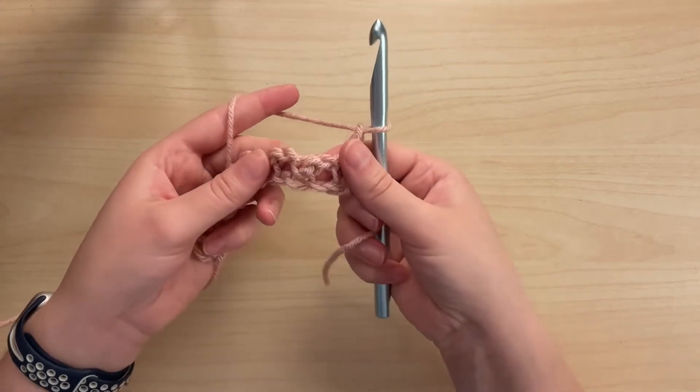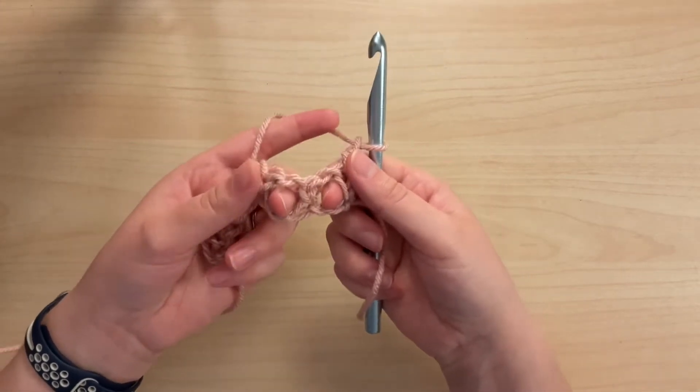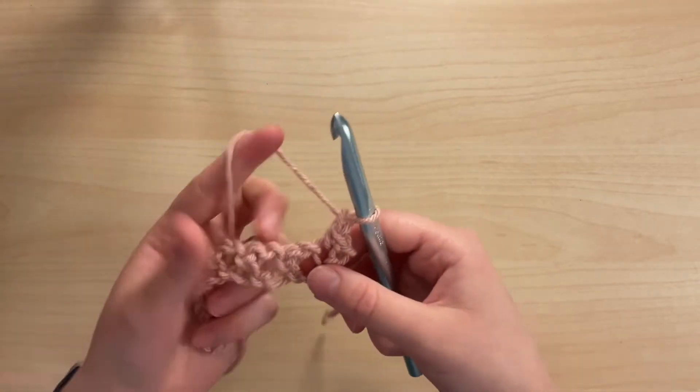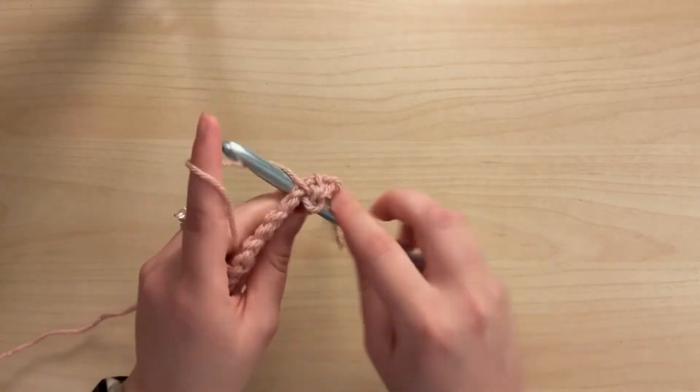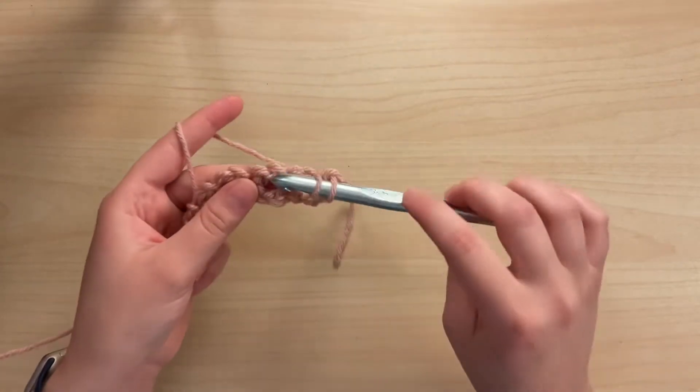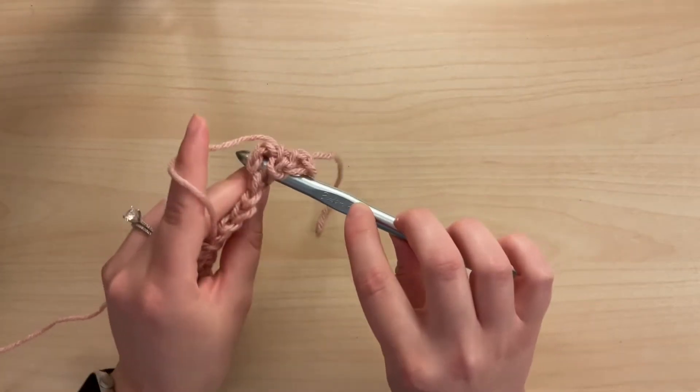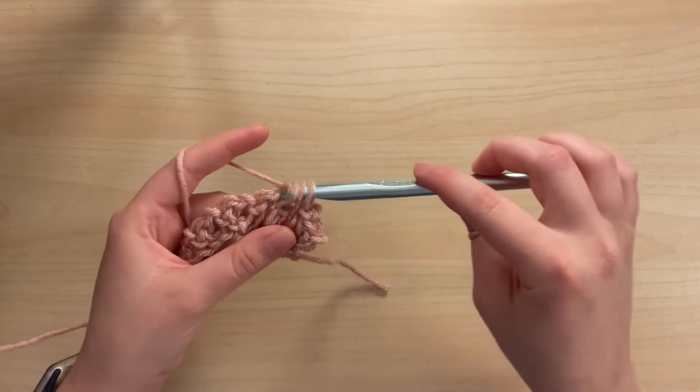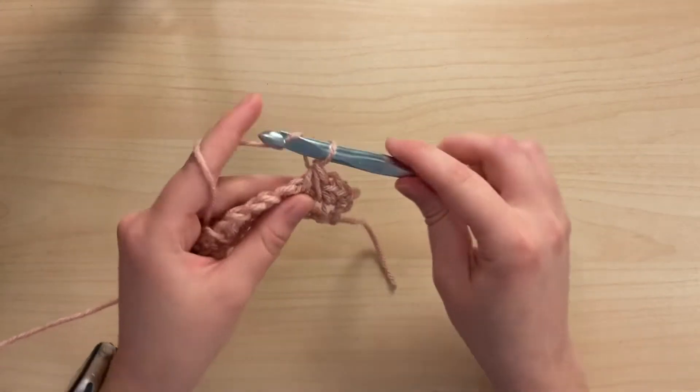Now we'll notice these two chain spaces. We're going to work a single crochet two together into both of these spaces. So we'll insert our hook, pull up a loop, find the next chain space, insert your hook, and pull up a loop. You'll yarn over and pull through all three loops. Then we'll chain one.